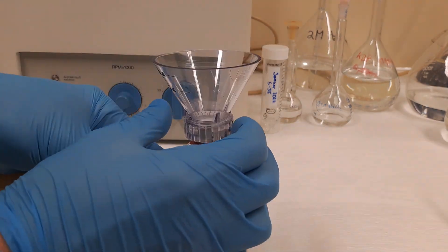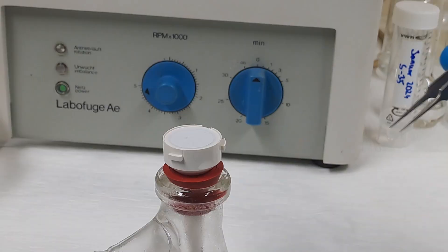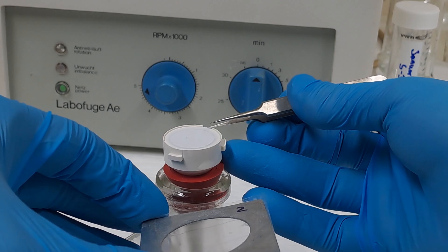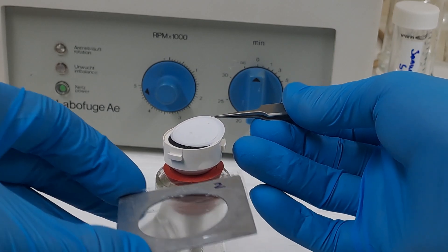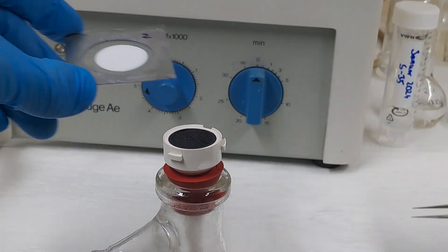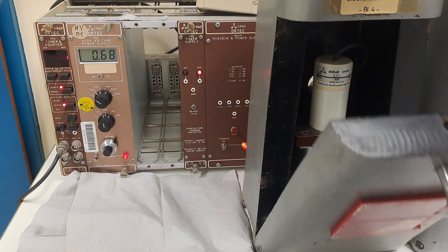After filtration, carefully transfer the membrane filter onto the prepared adhesive tape using tweezers. The barium sulfate filter cake should be facing up on the sticky tape side of the tape within the frame.